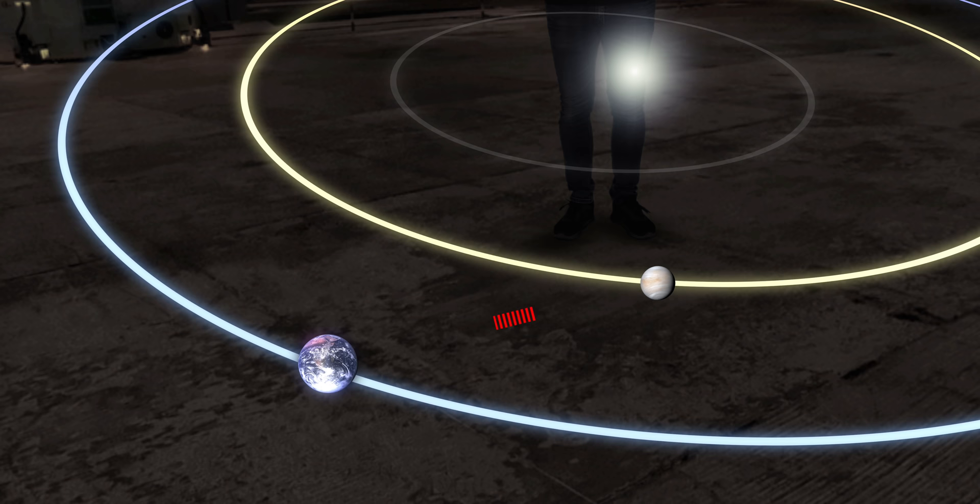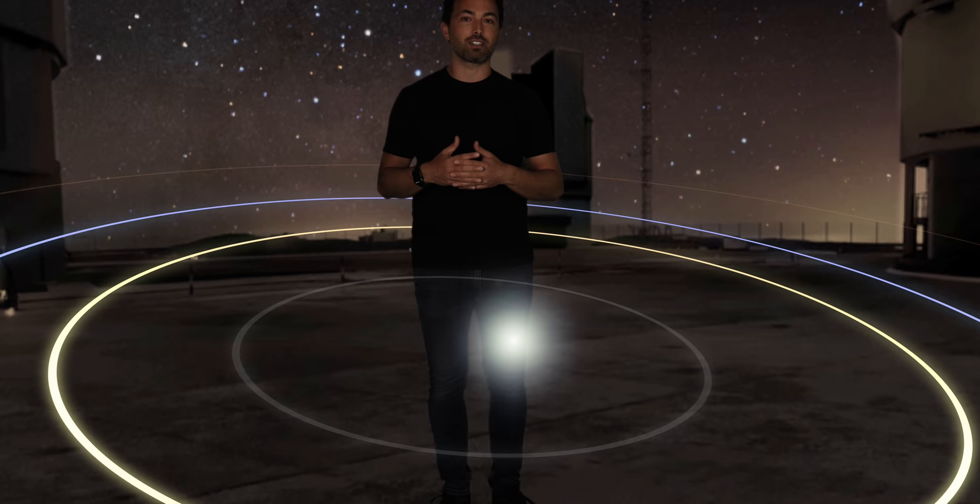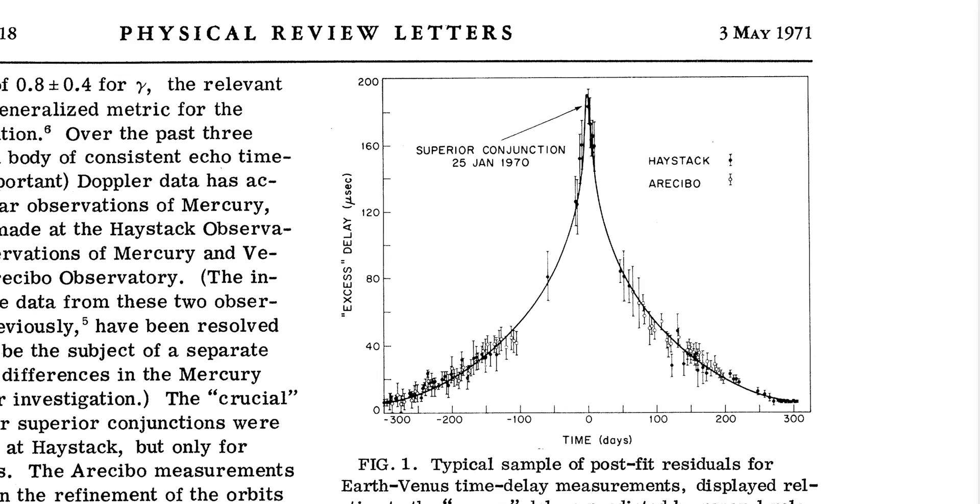This is solely a gravitational time delay, not related to the extra distance the light has to travel. And within a couple years, experimental data revealed the gravitational time delay for light traveling past the Sun was exactly as predicted.